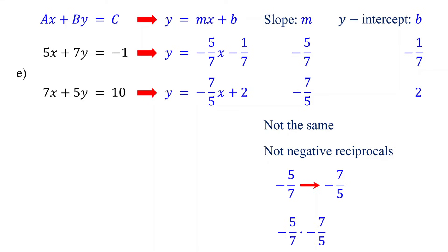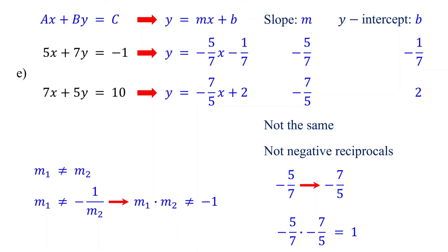If you multiply them, you get 1, not negative 1, confirming they are not perpendicular. If the slopes of two lines are not the same and they are not negative reciprocals, then the lines are neither parallel nor perpendicular.